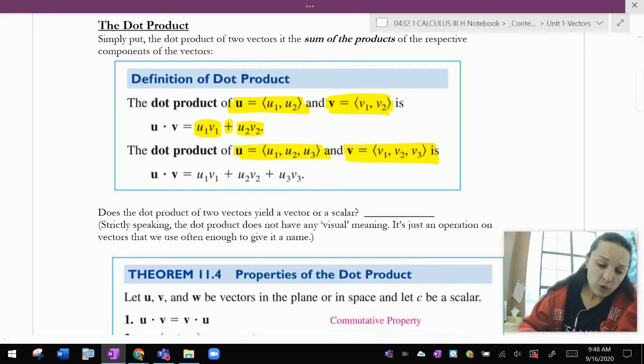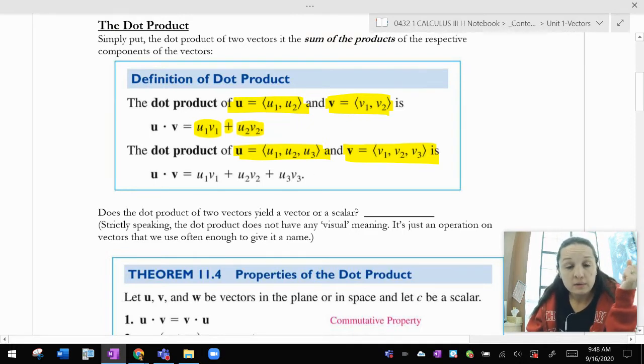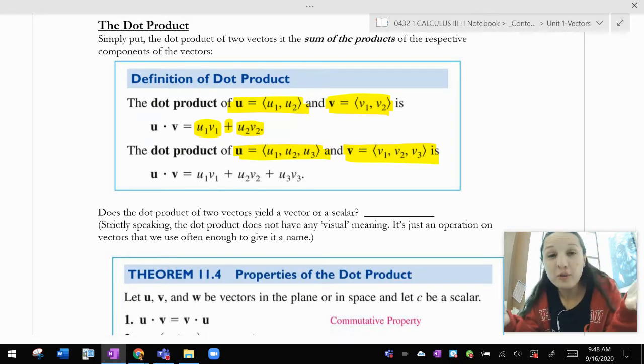So if you're multiplying numbers and then adding numbers, do you see any commas on the right-hand side? Do you see Swiper? No, you're right. There are no commas.